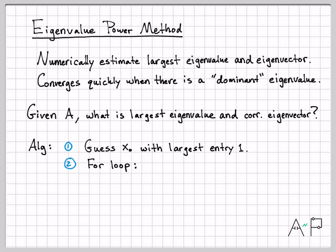After we've made that guess, we're going to do a for loop — an iterative approach to hone in on the largest eigenvalue and eigenvector. Here's what we do: for each value of k, we compute a matrix product that I call p. So p equals A times x_k, resulting in this vector p. From that vector, we figure out which entry has the largest magnitude and call that n sub k — a scalar value on the kth iteration.